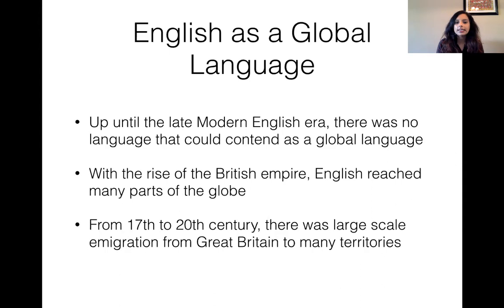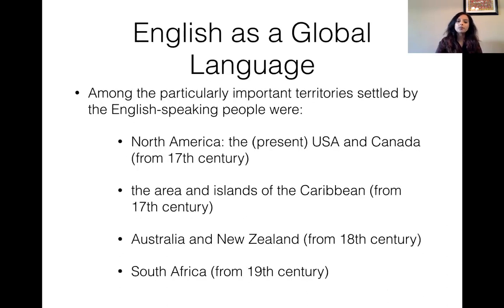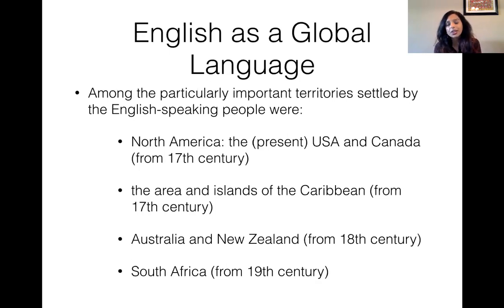Up until the late modern English era, up until like the 17th century, no language had dominance over the world — there was nothing remotely close to a global language. With the rise of the British Empire, English started penetrating many different countries and areas of the world, and the medium of communication was English. These were the areas where English was really spoken: North America (USA and Canada from 17th century), islands of the Caribbean (17th century), Australia and New Zealand from 18th century, and South Africa from 19th century.